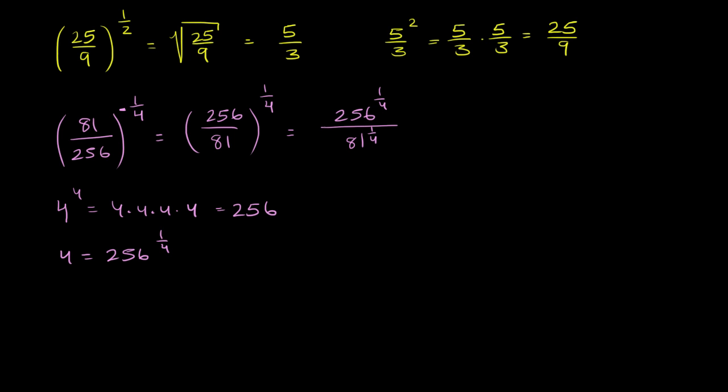Now what about 81? Well, 3 might jump out at you. We know that 3 to the 4th power is equal to 3 times 3 times 3 times 3, which is equal to 81. So 3 is equal to 81 to the 1/4.